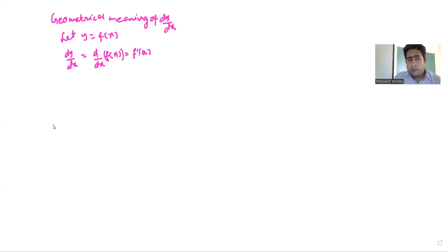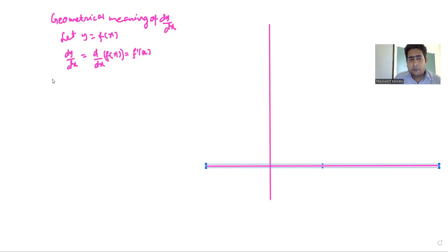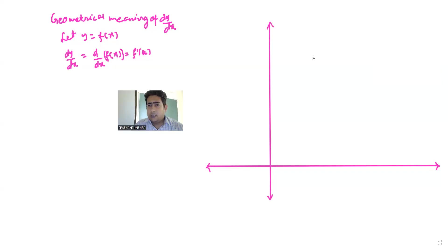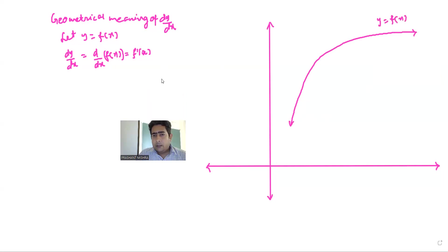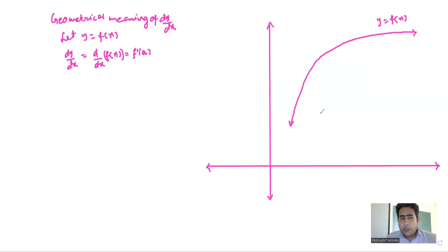To understand this better, I will take you to the Cartesian plane, which is the x-y plane. Suppose this is the x and y axis. Now the graph of y = f(x) is given to us — suppose this is the graph. I have taken two points on this graph.